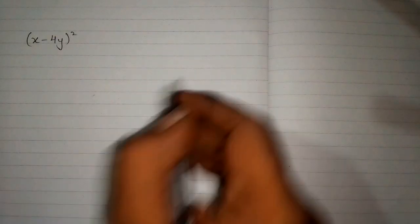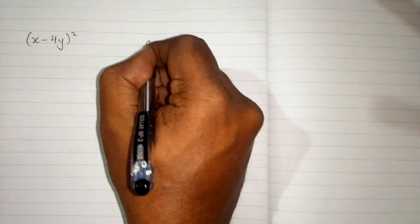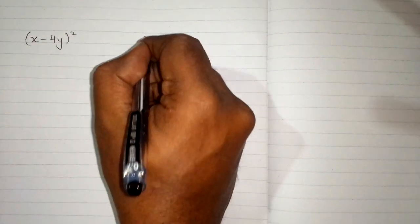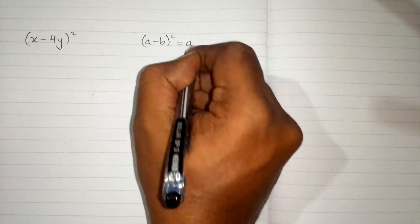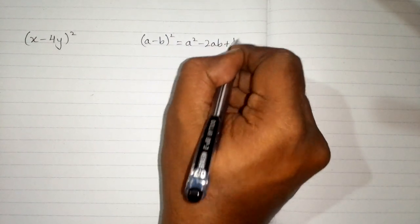In this video we will find the square of x minus 4y. So here we will apply the formula a minus b whole square equals a square minus 2ab plus b square.